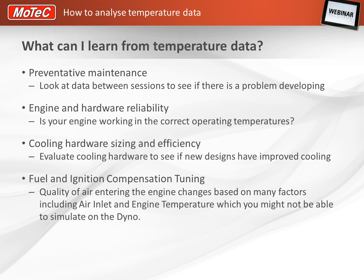Our ECUs are capable of adjusting the fuel and ignition maps to cater for temperature changes that you might actually see on track. Quality of air entering the engine changes based on many factors, including air inlet and engine temperature. Some of these channels you might not be able to simulate properly on the dyno. So logging this data can be really helpful for the engine tuner, so that between sessions these ECU maps could be modified to take into account the environmental conditions and offer some gains in performance.